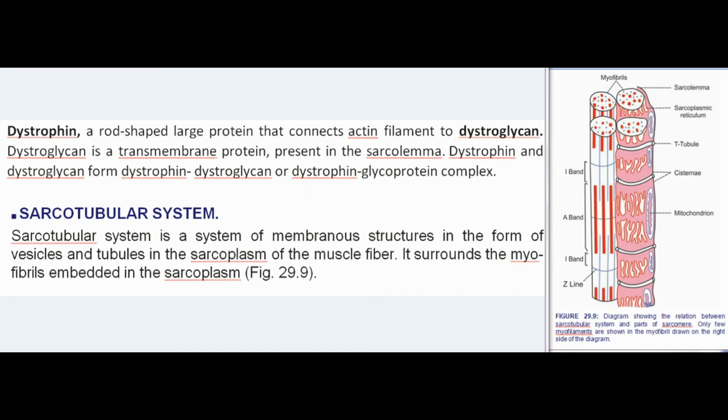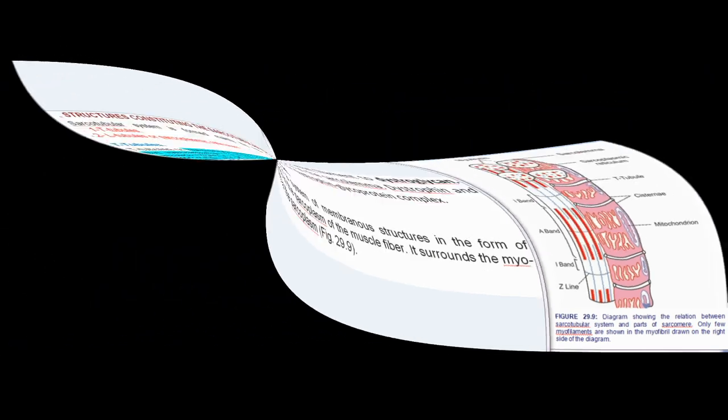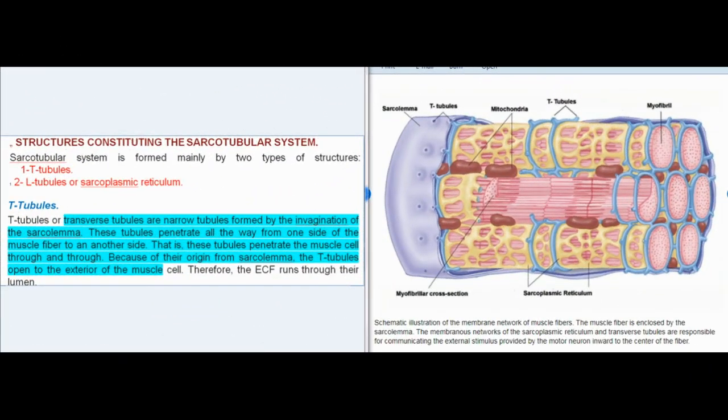Sarcotubular System: Sarcotubular system is a system of membranous structures in the form of vesicles and tubules in the sarcoplasm of the muscle fiber. It surrounds the myofibrils embedded in the sarcoplasm. Structures Constituting the Sarcotubular System: Sarcotubular system is formed mainly by two types of structures: 1. T-tubules, 2. L-tubules or sarcoplasmic reticulum.